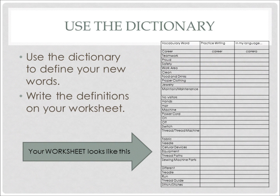Now let's talk about how to use the dictionary. Use the dictionary to define your new words. On the screen in front of you, you will see the words and the worksheet that you have. Do you see the words? The page starts with career. Use the dictionary to look up the words in English to define them in Spanish. Write the definitions on your worksheet. If you need to, you can pause the video or rewind to listen to the instructions again.